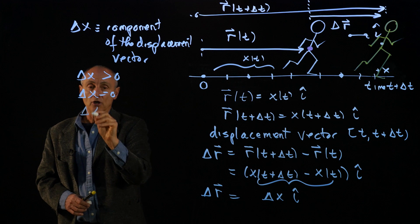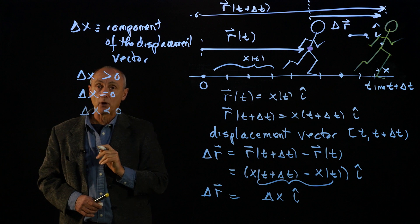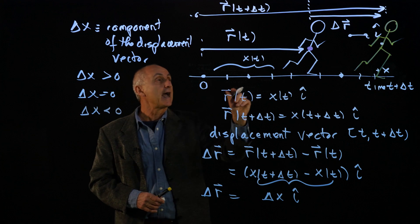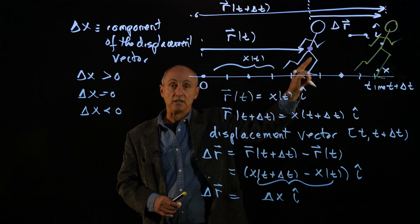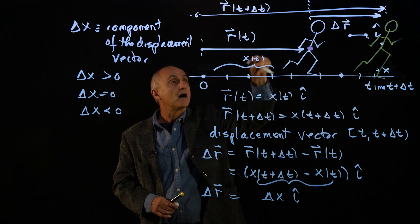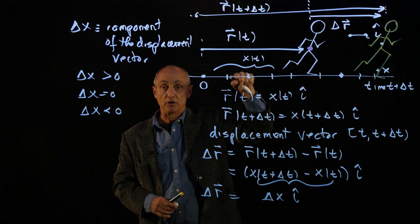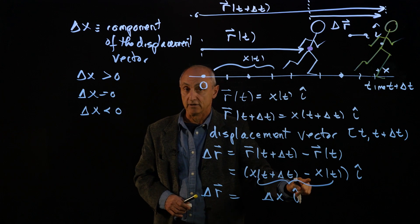The displacement vector could have a component that's negative. And what negative means is at the end of this interval, t plus delta t, the person is to the left of the runner, and so this quantity would be negative.